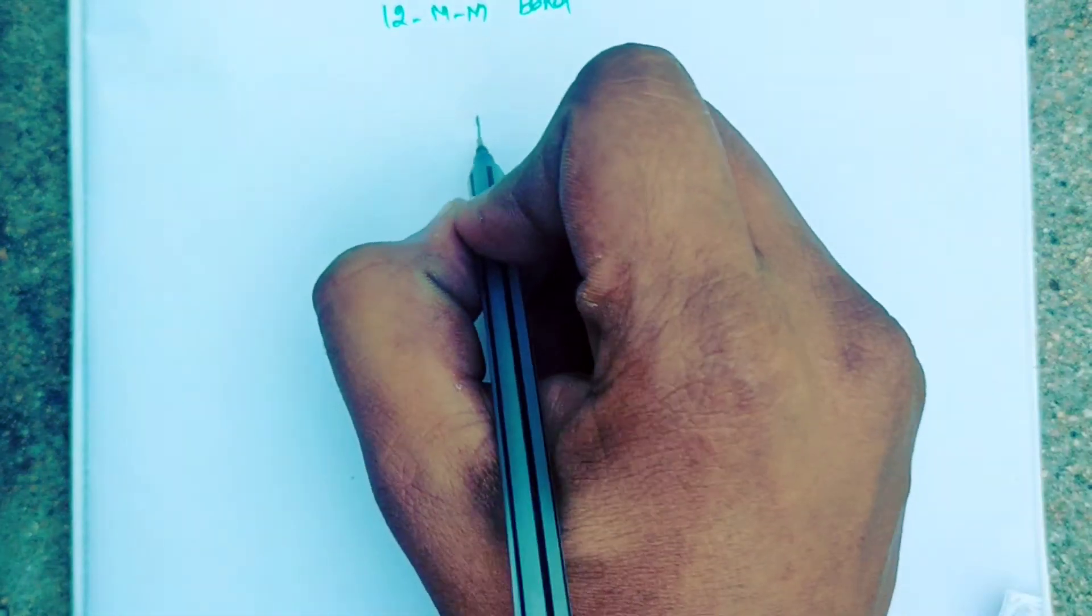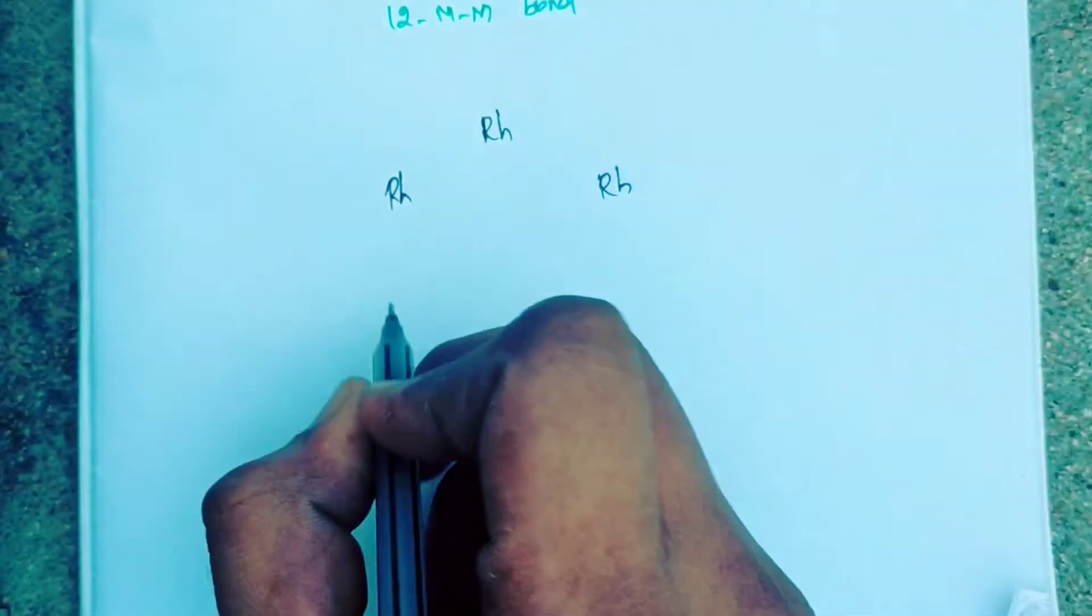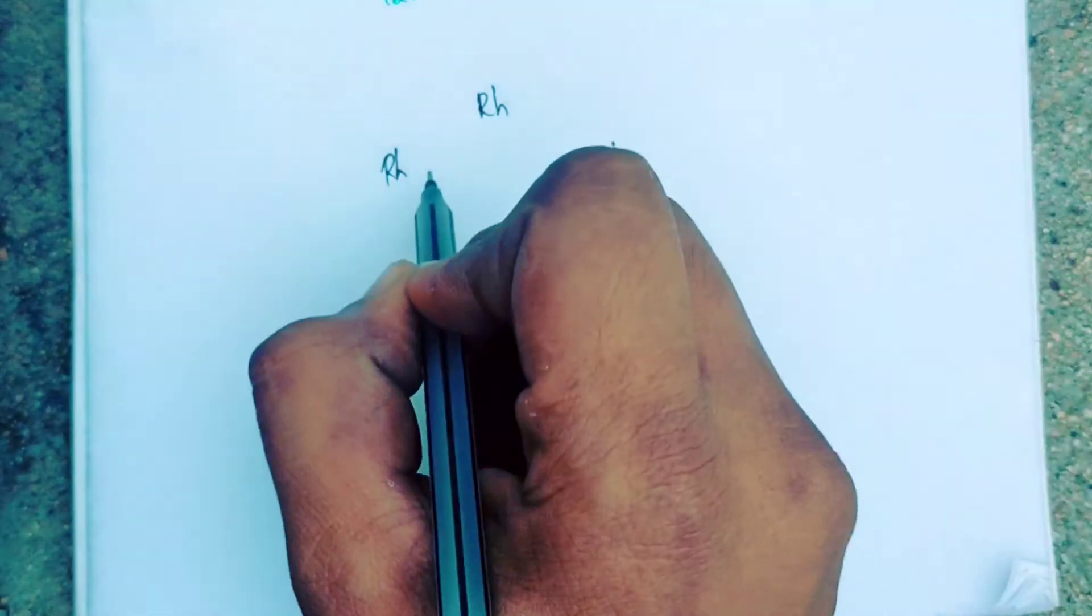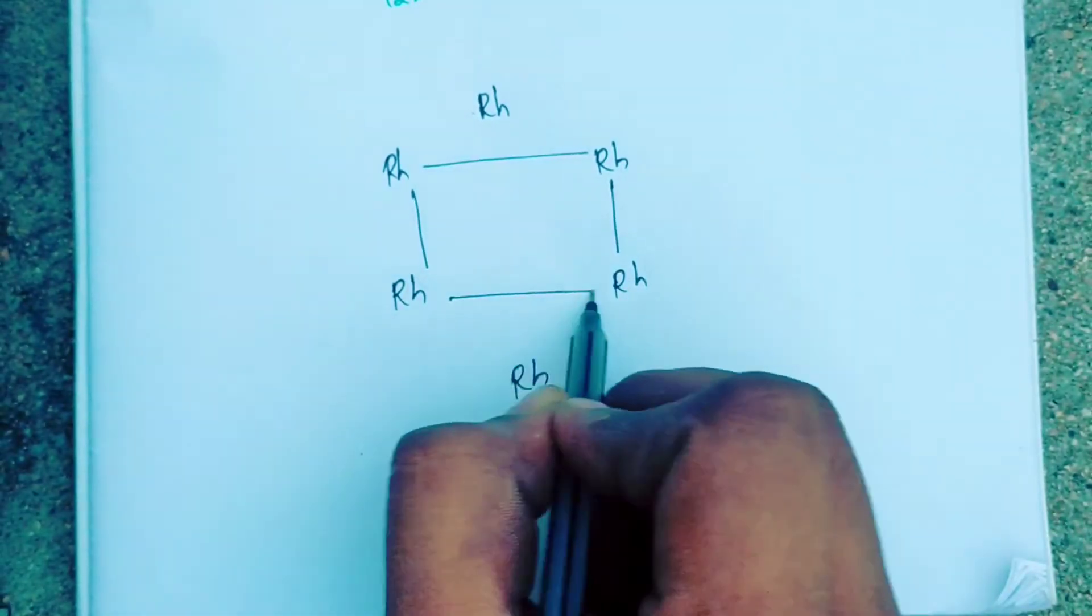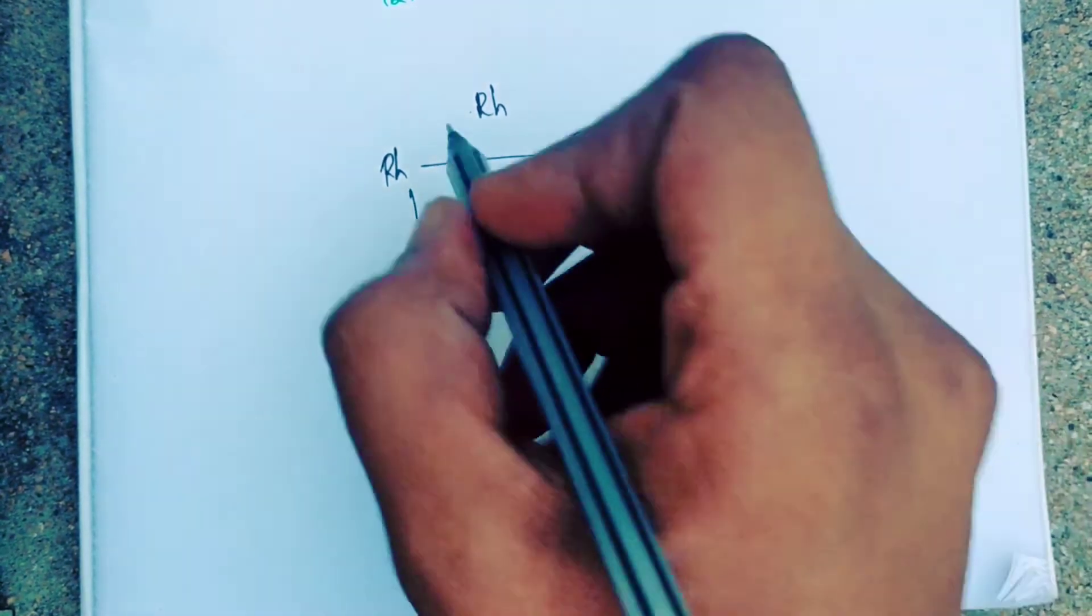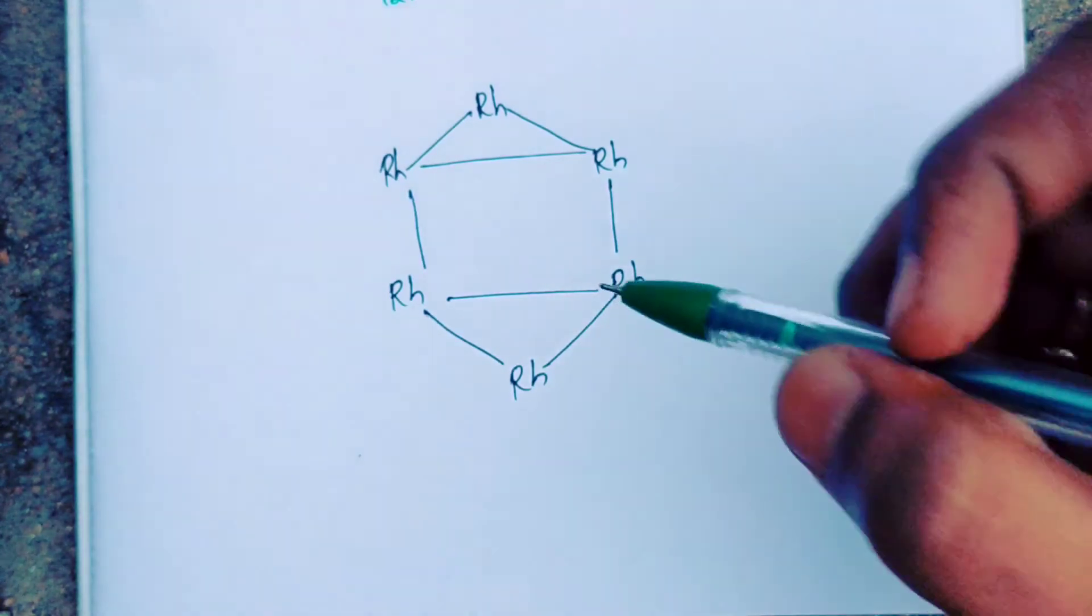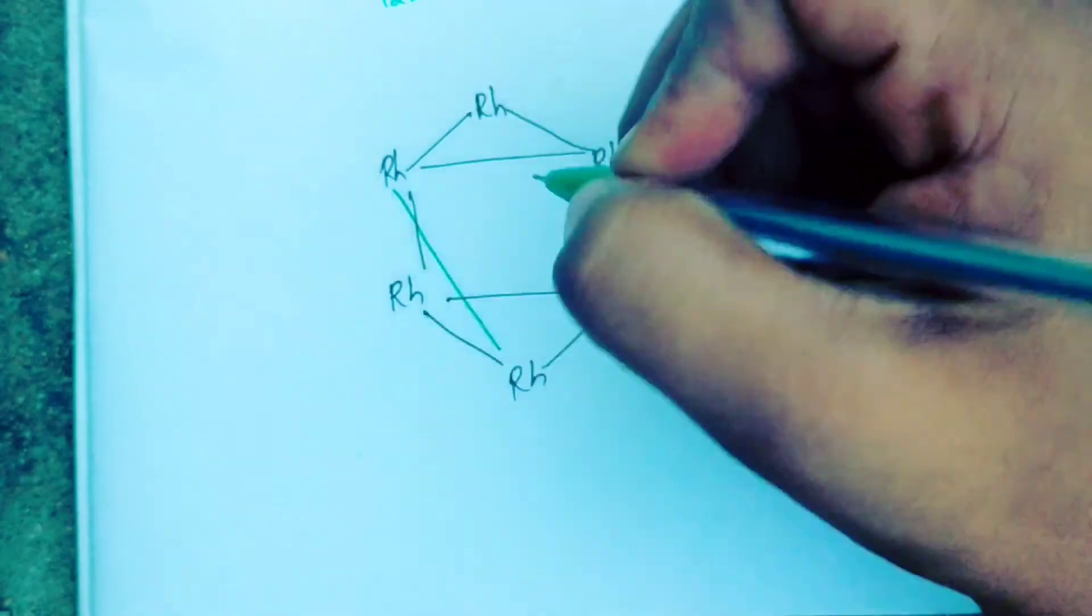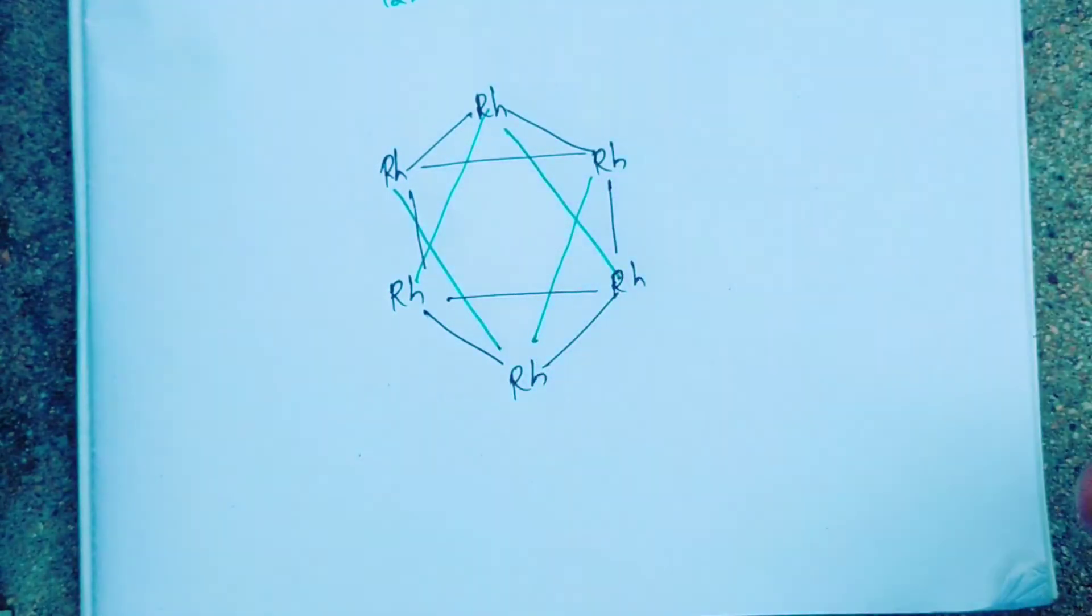There are 6 rhodiums present in the cluster, and they form an octahedral core. Drawing the octahedral structure: 1, 2, 3, and 4 metal-metal bonds here. Then 5, 6, 7, 8. Next 9, 10, 11, and 12.